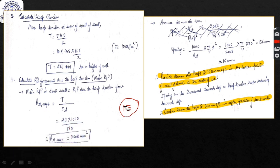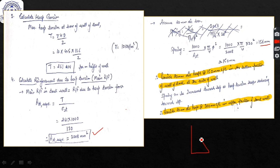Ast required = T / sigma_st = 261 × 1000 / 130 = 2008 mm². We assume 20 mm diameter bars and calculate the spacing. The calculated spacing is 156 mm, so we provide 20 mm dia bars at 150 mm center-to-center at the bottom portion. The spacing can be increased towards the top as water pressure decreases.